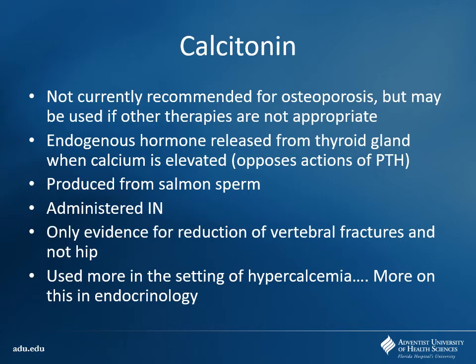Another drug is calcitonin — not recommended as first-line for osteoporosis but occasionally used if other therapies have failed, or for hypercalcemia. It's an endogenous hormone that essentially opposes the action of PTH — you can think of it like PTH's counteracting hormone, similar to how glucagon counteracts insulin. Interestingly, the calcitonin we use is actually produced from salmon — that's where we harvest it from. It comes as an intranasal spray absorbed from the nasal mucosa. The downside: bisphosphonates show decreased risk of both hip and vertebral fractures, but calcitonin really only works on vertebral fractures based on current evidence, so it's not preferred.